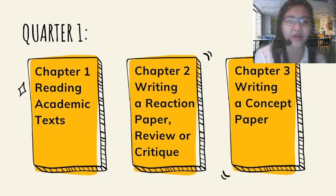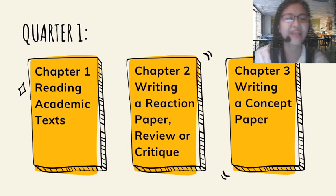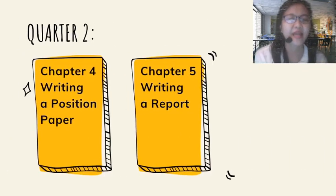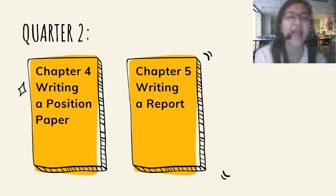In quarter one, you will be studying the first three chapters, namely: Chapter One, Reading Academic Texts; Chapter Two, Writing a Reaction Paper, Review, or Critique; and Chapter Three, Writing a Concept Paper. In quarter two, you will be studying Chapters Four and Five, which are about Writing a Position Paper and Writing a Report, respectively.